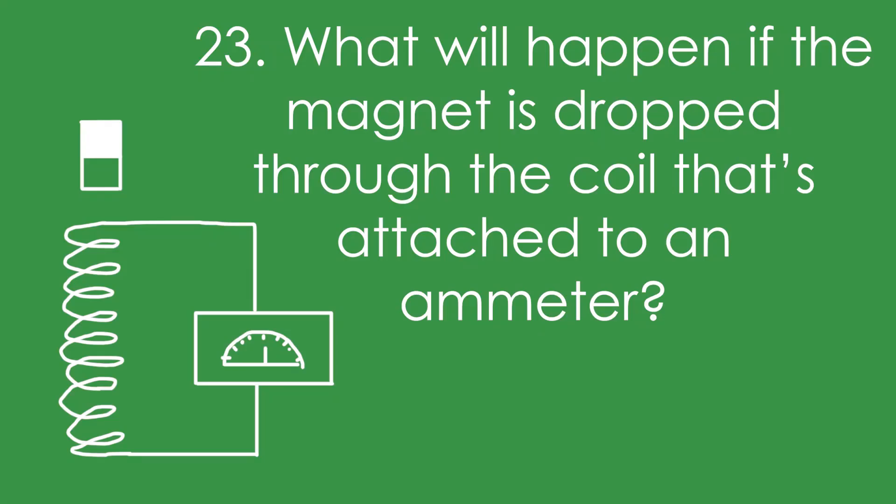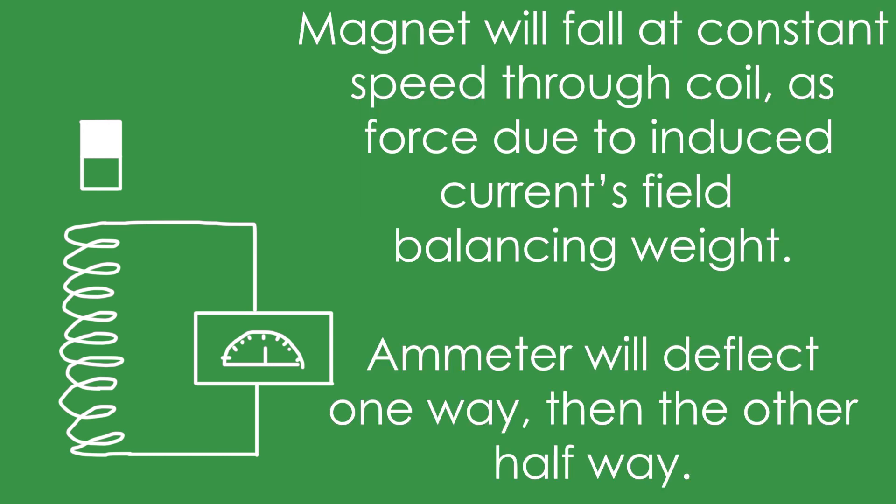Question 23: What will happen if a magnet is dropped through a coil attached to an ammeter? The magnet will fall through the coil at a constant speed, because the force due to the induced current's field balances the weight. The ammeter deflects one way, then the other way when the magnet gets halfway. When it exits, the ammeter returns to zero.